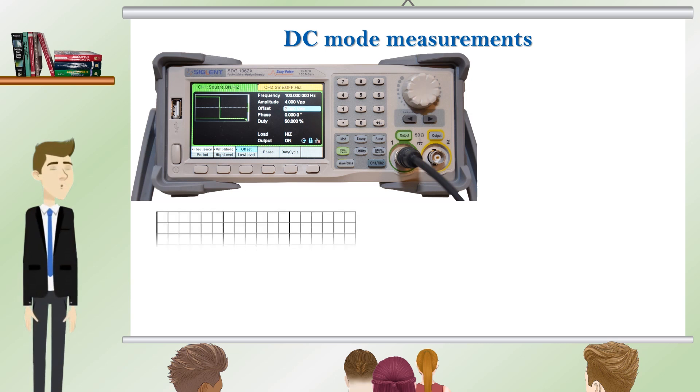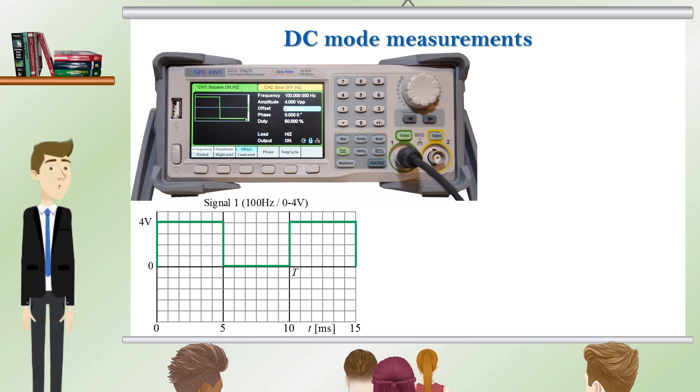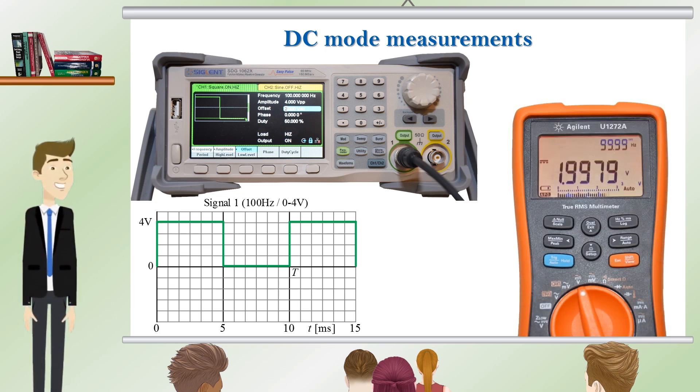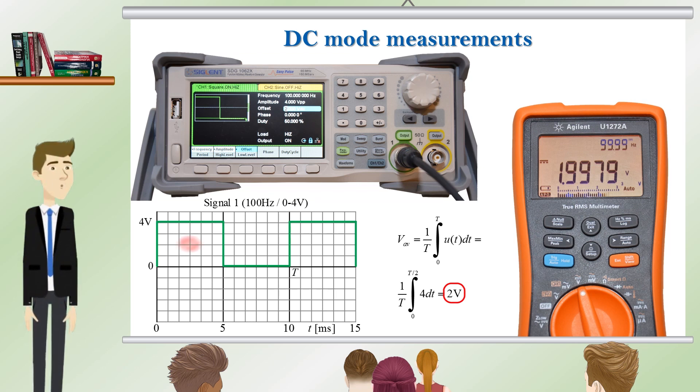We apply a square pulse from the function generator to the multimeter signal 1. The frequency of the signal is 100 hertz and the amplitude is 4 volts. In DC mode the multimeter measures the average pulse value according to the formula. The average value represents the area of the waveform over one period.